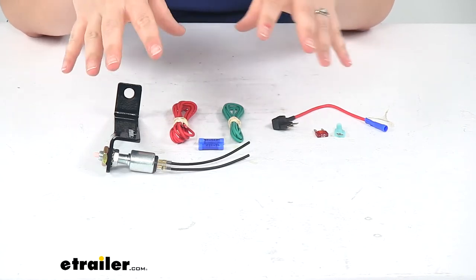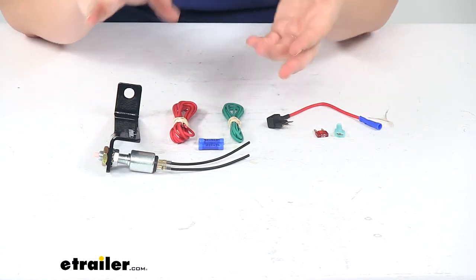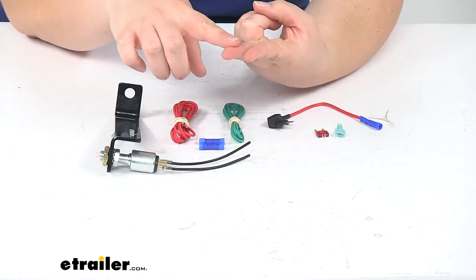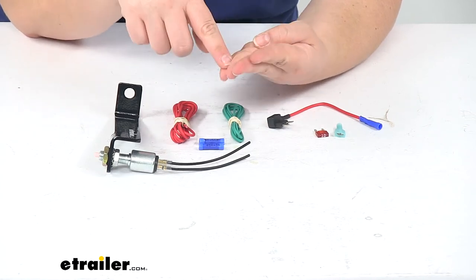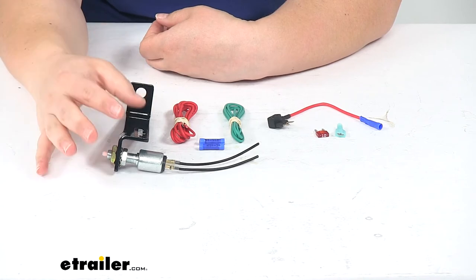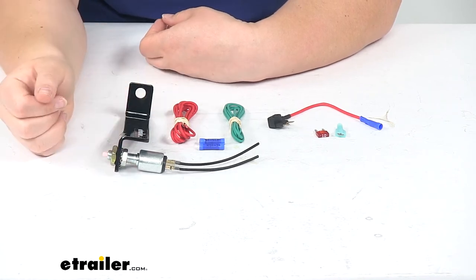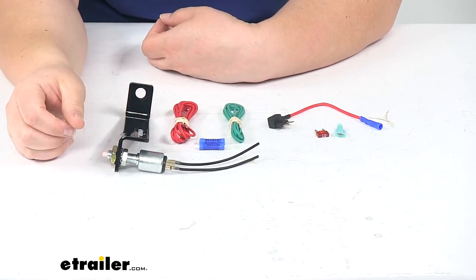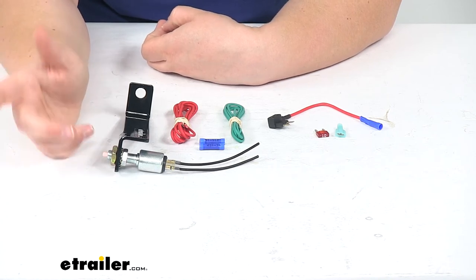This is one component of your flat tow system. You'll also want to get a base plate, a braking system, wiring, and a tow bar, among other things, to get a complete flat tow setup for your vehicle. Check out eTrailer.com—we have a lot of information and options for all vehicles, including the Ford Flex.